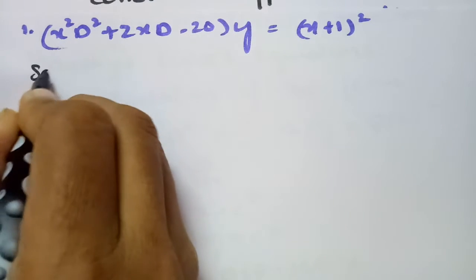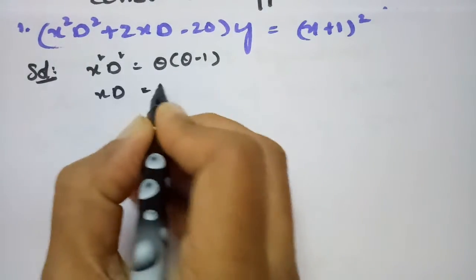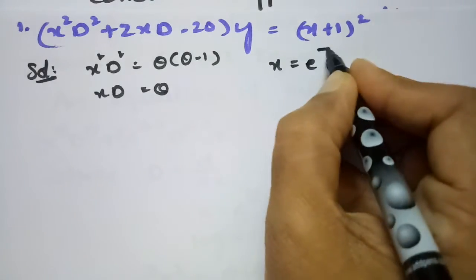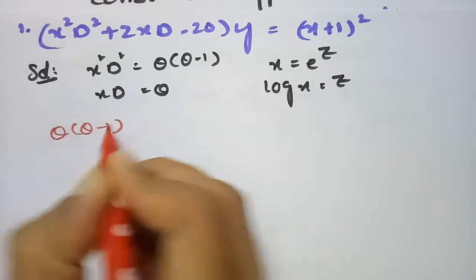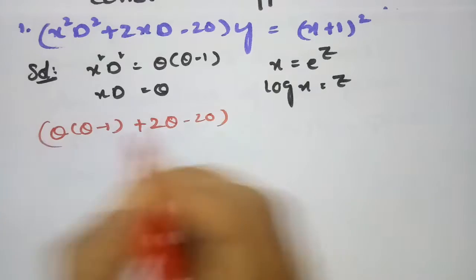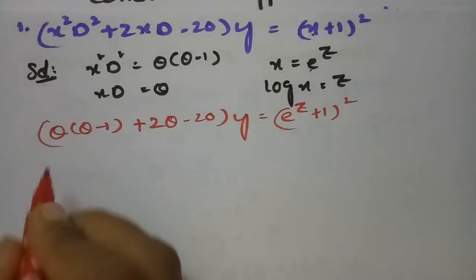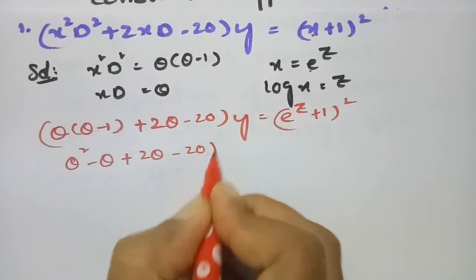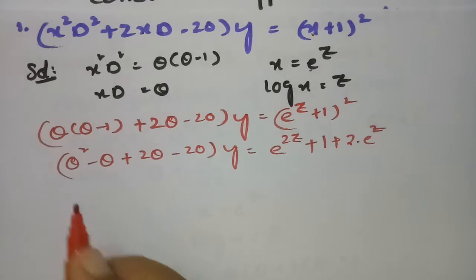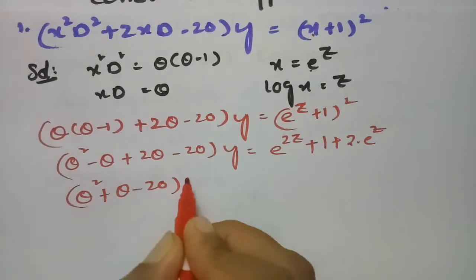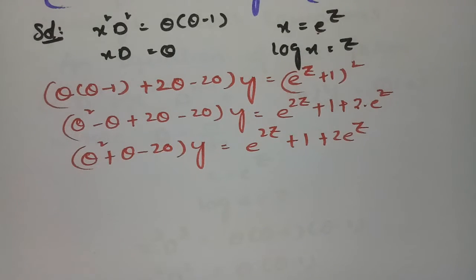Now in order to solve this, we use the substitution: x²D² is replaced by θ(θ−1), and xD is simply θ, with x = e^z and log x = z. Transforming the equation: in place of x²D², write θ(θ−1), plus 2·xD gives 2θ, minus 20, of y equals (e^z + 1)². Expanding: θ² − θ + 2θ − 20 = e^(2z) + 1 + 2e^z, which simplifies to θ² + θ − 20 of y = e^(2z) + 2e^z + 1.